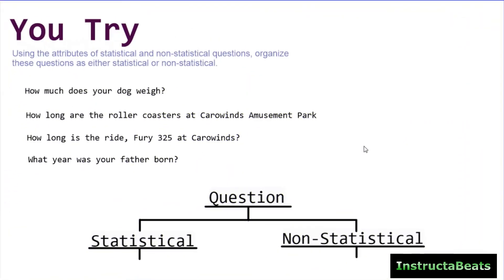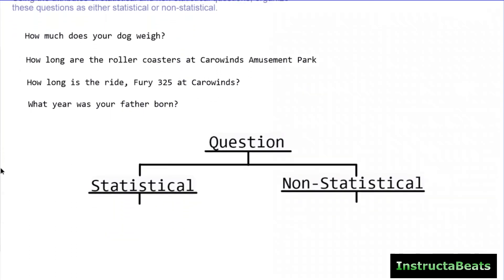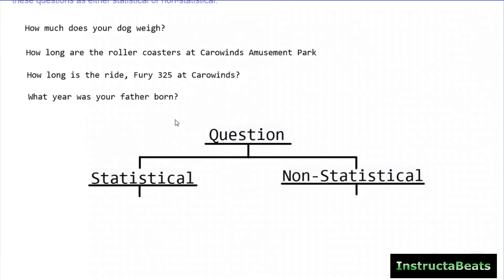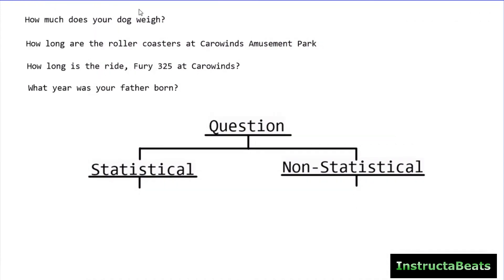Here we have a 'you try' problem with four different questions. Pause the video, check your understanding, try to solve it, and then push play when you're ready to check your work. My first question says 'how much does your dog weigh?' There's only one answer to that question — my dog weighs 35 pounds. It's anticipating one response, so this is a non-statistical question.